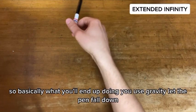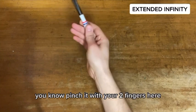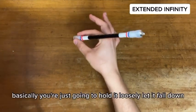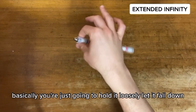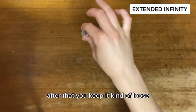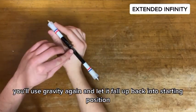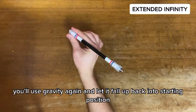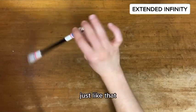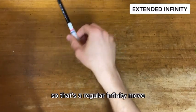You use gravity, let the pen fall down. You pinch it with your two fingers here. Basically you're just going to hold it loosely, let it fall down. After that, keep it kind of loose. You'll use gravity again and let it fall back up into starting position, just like that. So that's a regular infinity move.